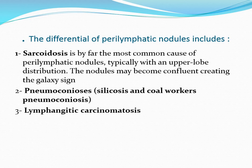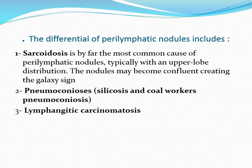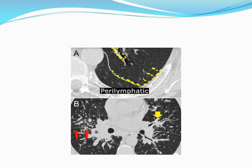The differential diagnosis of perilymphatic nodules includes sarcoidosis, which is the most common cause, typically with upper lobe distribution. The nodules may become confluent, creating the galaxy sign. Pneumoconiosis, like silicosis and coal-worker's pneumoconiosis, may have imaging identical to sarcoidosis, but usually there is a history of exposure. Also lymphangitic carcinomatosis. There are multiple nodules within the interlobular septa, within the fissure, and the bronchovascular bundle.